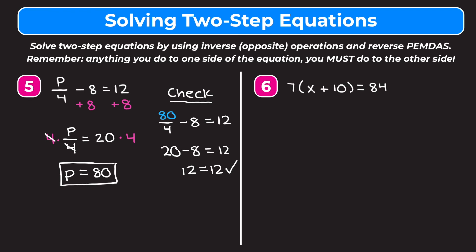For our last example, we have 7 times the quantity of x plus 10 is equal to 84. Reverse PEMDAS tells us to get rid of this 7 that's being multiplied before doing anything inside the parentheses, so we divide both sides by 7. 7 divided by 7 is 1, so those cancel out, leaving x plus 10 on the left. 84 divided by 7 is 12 on the right. Now to get rid of this plus 10, we do the inverse — subtracting 10 from both sides. Plus 10 and minus 10 go to 0, leaving x. 12 minus 10 is 2. So x equals 2.